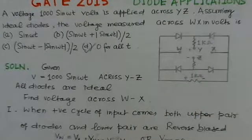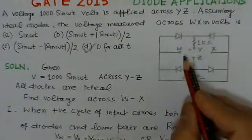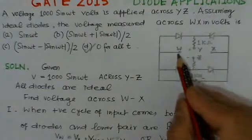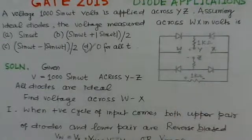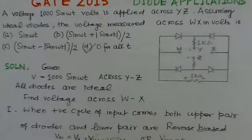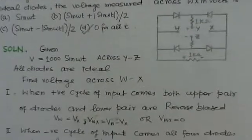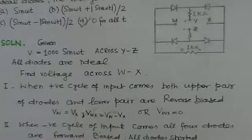So, this voltage VW is equal to VX. And we have to find VWX with the difference of VW minus VX. So, since these voltages are identical, VWX would be 0. This VWX would be 0.